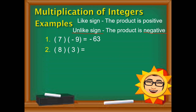Let's proceed with the second example. 8 times 3 — like naman ito, parehas positive. So just multiply it like a whole number: 8 times 3 is 24, and that's positive. Pag like sign, the answer is positive. Let's proceed with the third one: negative 5 times negative 10. Obviously it's like sign — parehas negative. So immediately, pwede na natin i-times, at ang magiging sagot ay positive kasi like sign. Negative 5 times negative 10 is 50.